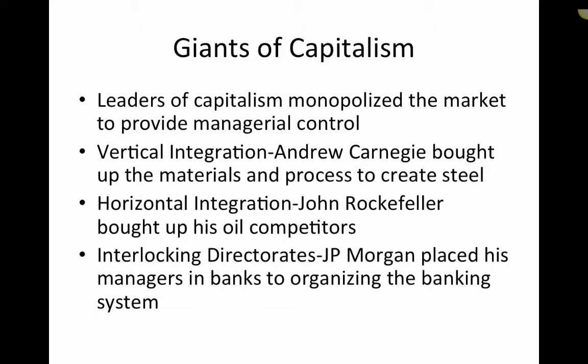Interlocking directorate works like this: J.P. Morgan would go to a local bank, tell them they were about to fail, and offer them a loan. In return for that loan, they would have to allow J.P. Morgan's representatives to reside on their board of managers. By doing this, J.P. Morgan could basically interlock all of these banks under his control.